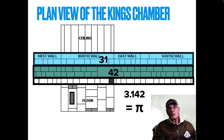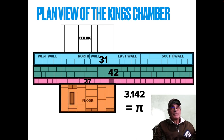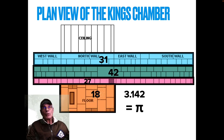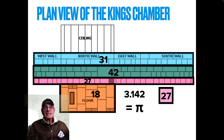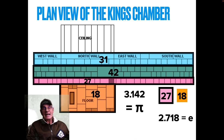If we look at the fifth course and count those, and then look at the floor — there are 27 in the fifth course, and on the floor there are 18 blocks. 27 and 18: 2.718. That's the Euler constant. Incredible.